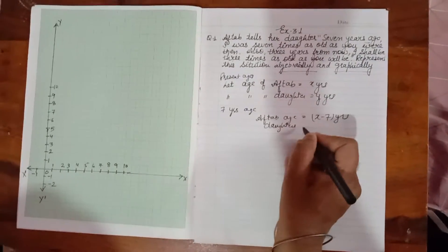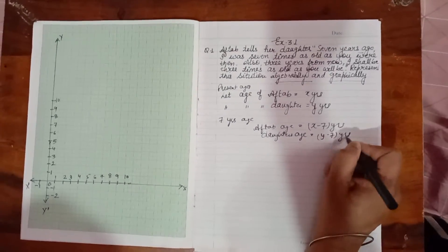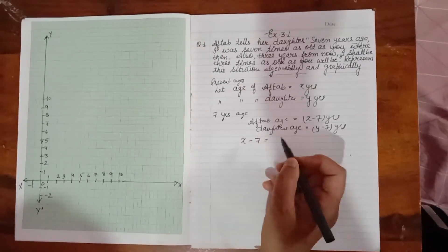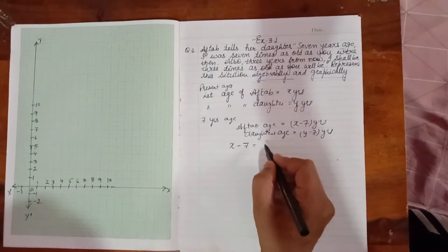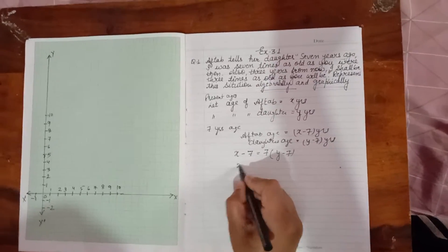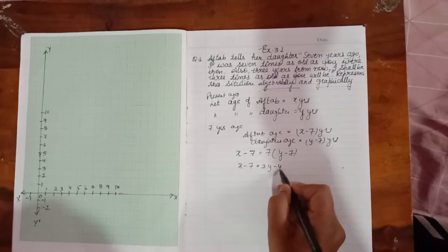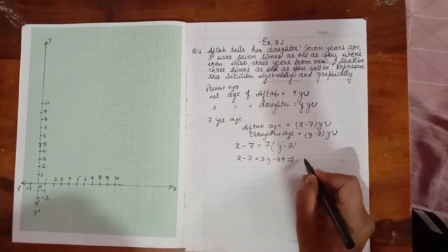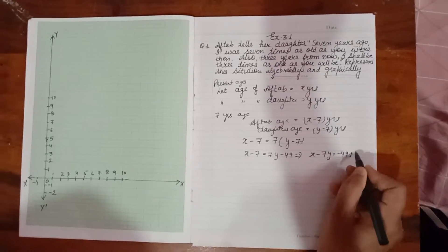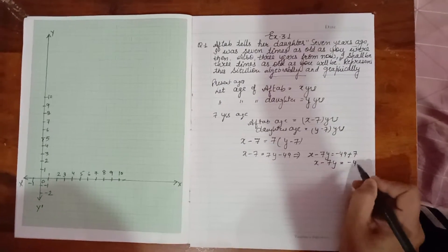They are saying that Aftab's age will be seven times the daughter's age, so x minus seven is equal to seven times y minus seven. Solving: x minus seven equals seven y minus forty-nine, which gives x minus seven y equals minus forty-nine plus seven, that is x minus seven y equals minus forty-two. This is the first equation.